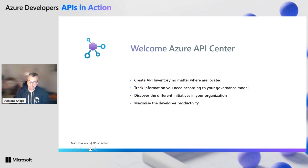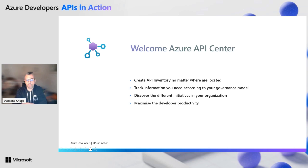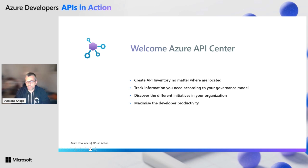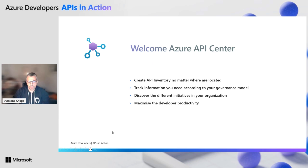Azure API Center works as an API catalog. It helps you create an inventory of your APIs no matter where they are located — in a cloud, in a Microsoft cloud, in another cloud, on premises — and no matter which technology you use for hosting: Functions, Kubernetes, API Management, Kong, etc. It helps you track information about the APIs and manage the governance model. Wherever your APIs are in your flow to production, it gives you a view on where they are, which deployments have been triggered, and to which environment. At the end of the day, it maximizes developer productivity and facilitates their use.